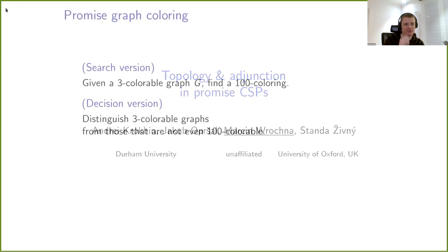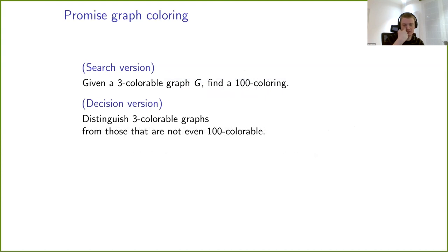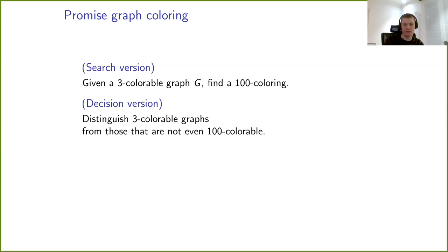I'm going to introduce promise CSPs in case you don't know. The simplest example is promise graph coloring. You're given a 3-colorable graph G and you want to find a 10-coloring at least. Or in the decision version, you want to distinguish 3-colorable graphs from those that are not even 10-colorable. So you have this strict notion of satisfaction — 3-colorability — and some weaker notion — 10-colorability — and you want to distinguish between them.